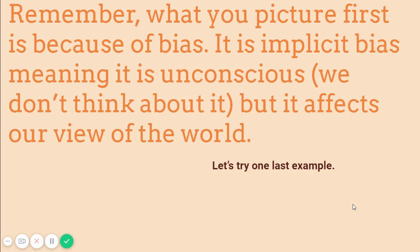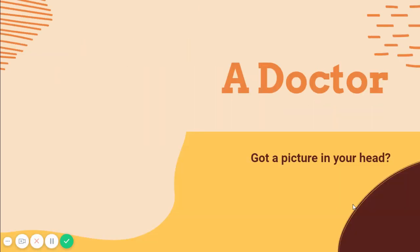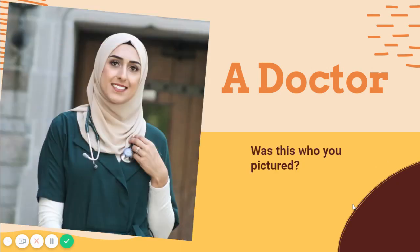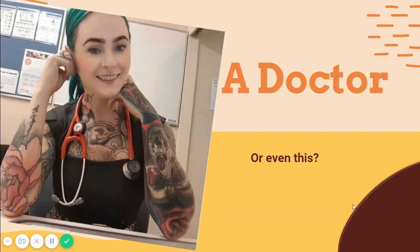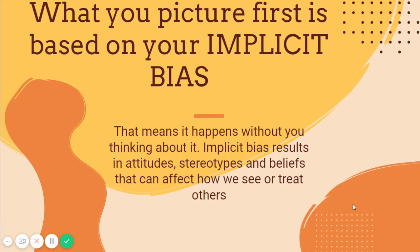Let's try one last example. A doctor. Got a picture in your head? Was this who you pictured? Or this? Or even this? What you picture first is based on your implicit bias. That means it happens without you thinking about it.